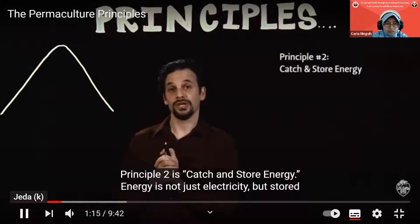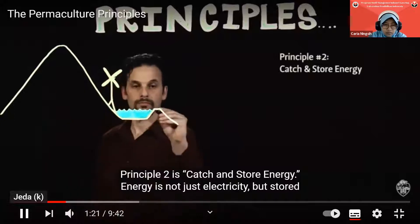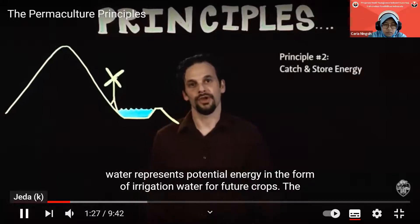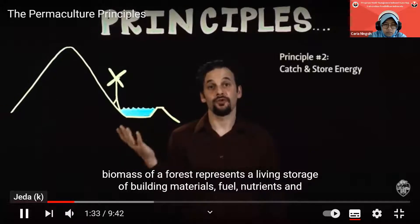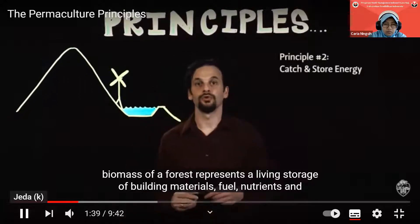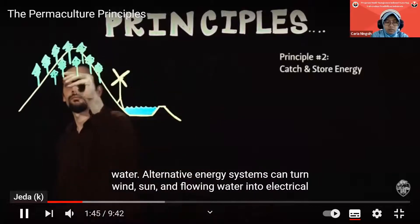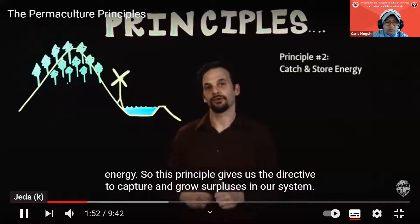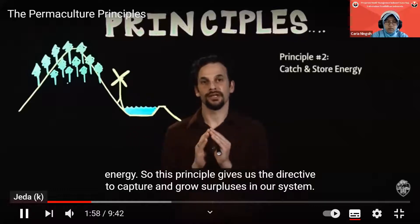Principle two is catch and store energy. Energy is not just electricity — stored water represents potential energy in the form of irrigation water for future crops. The biomass of a forest represents a living storage of building materials, fuel, nutrients, and water. Alternative energy systems can turn wind, sun, and flowing water into electrical energy. This principle gives us the directive to capture and grow surpluses in our system.